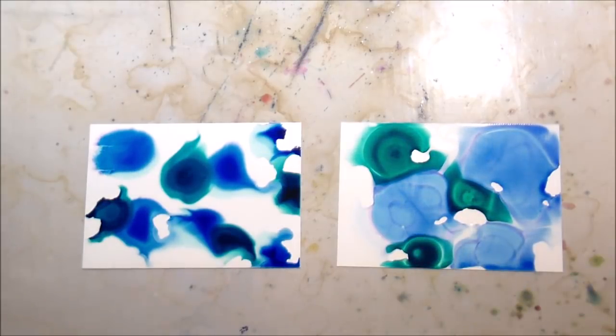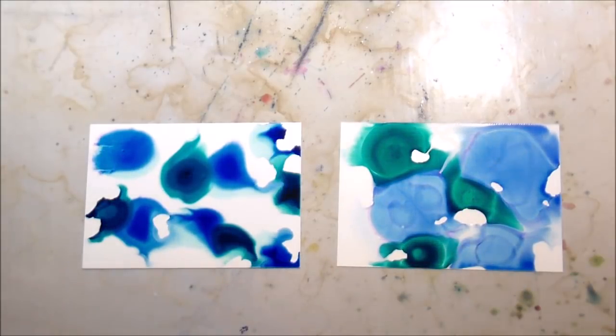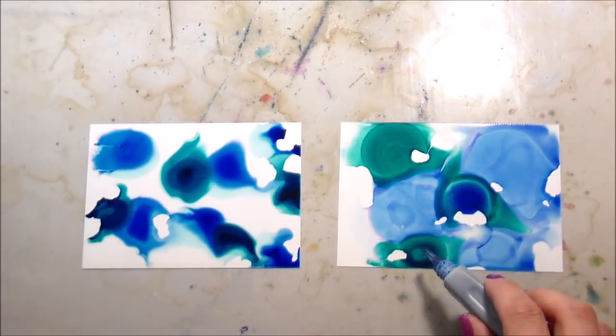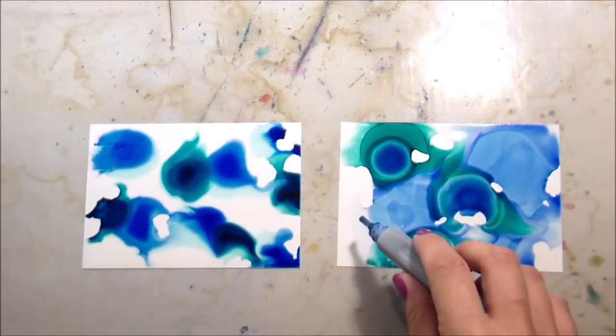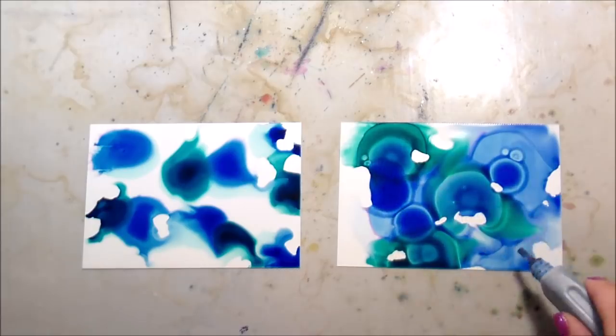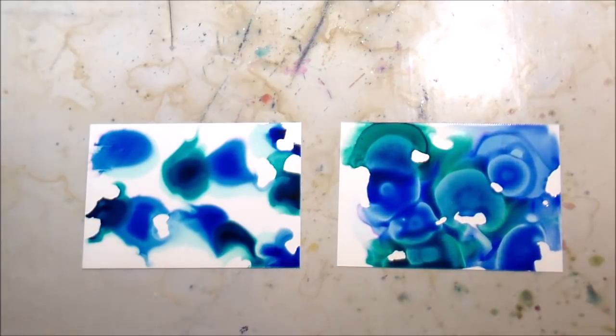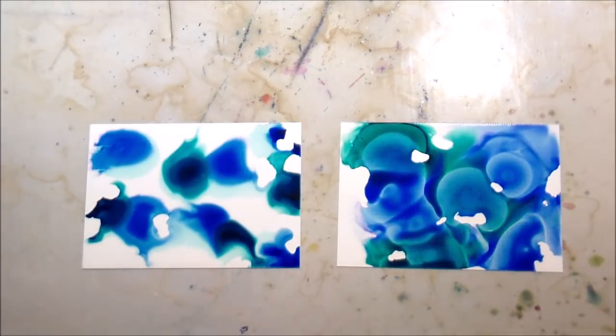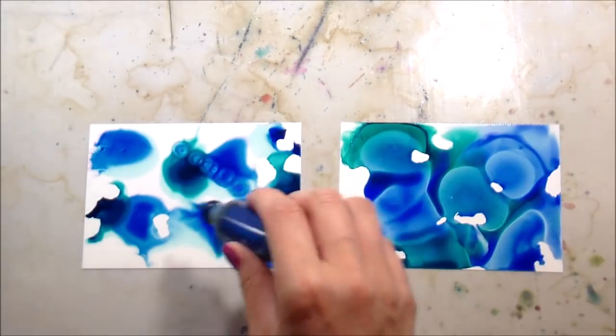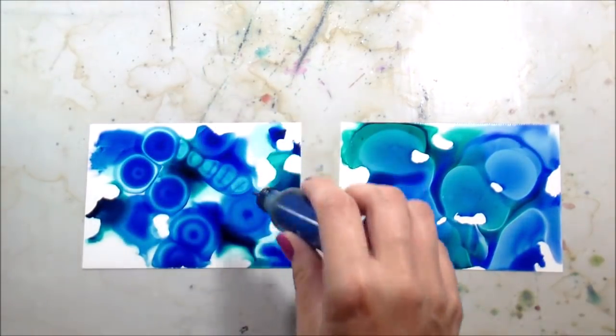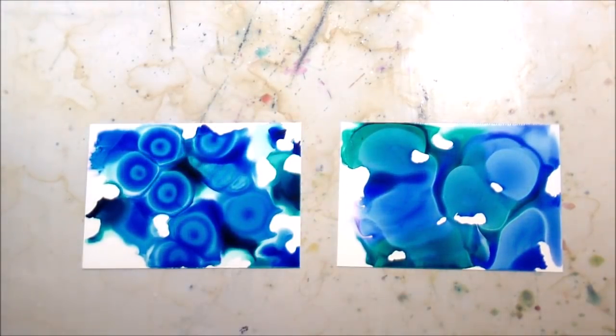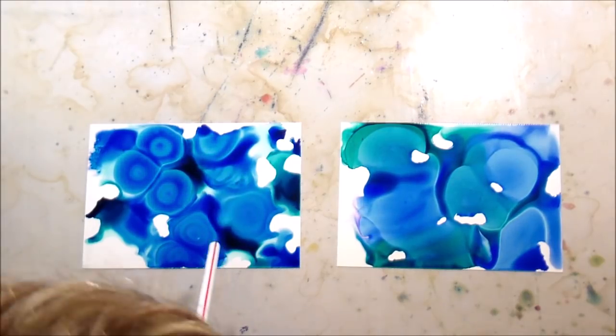And right out the gate, you can see that the Copic reinkers do spread more and they go on a little bit lighter. So I'm having to add just a little bit more pigment to get them to be as dark as I would like.